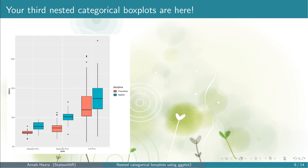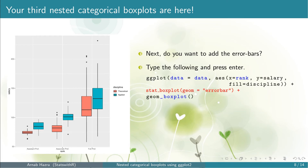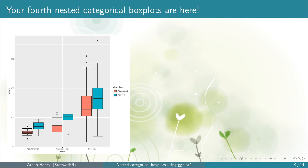Just use the same codes we used to create the second ggplot. Press enter and you get your third nested categorical boxplots. Note that the levels of rank and discipline have changed and they appear way more informative than earlier. Next, note that the boxplots do not have error bars. To add the error bars, add stat_boxplot with geom equals to errorbar within quotes. Note that we add this before geom_boxplot — the ordering is important here. Press enter and you get your fourth nested categorical boxplots. Note that the error bars are now added.